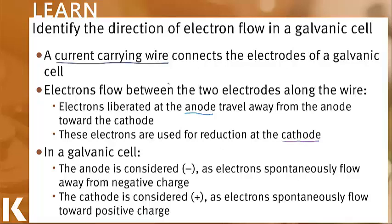In a galvanic cell, it is important to note that the anode is always going to be considered negative. This is because a galvanic cell is spontaneous and electrons, being negative, will spontaneously flow away from that negative charge. The cathode, on the other hand, is considered positive, as the electrons, which are negatively charged, will be attracted to this positively charged cathode. So they will spontaneously flow toward that positive charge.